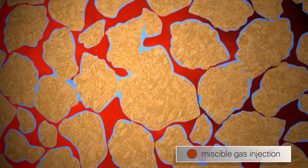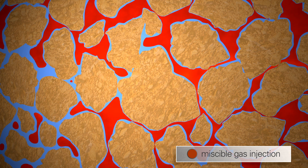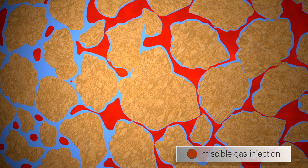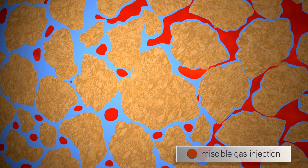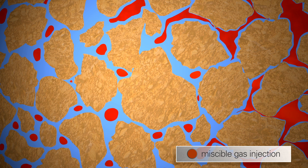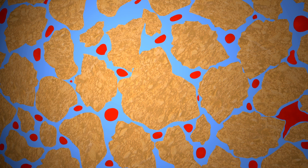When the miscible gas flood is finally stopped, water is injected to push the remaining gas out, and gas takes the place of the residual oil in the pores while the oil is produced.